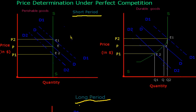In the short period, there are two types of products. One is perishable goods which may be used only one or two days, like milk. We cannot increase the supply of milk.